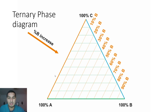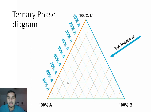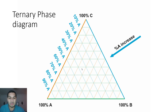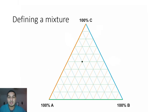The same applies for B: 0% B at one side, increasing to 100% B, and likewise for A. So you can divide the diagram into parts, and depending on the location of a point you place on the diagram, you can determine the exact composition of that mixture.